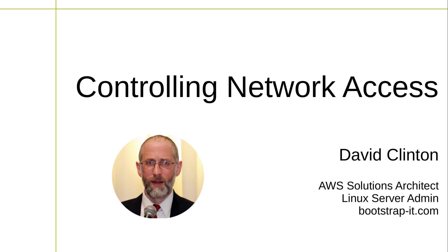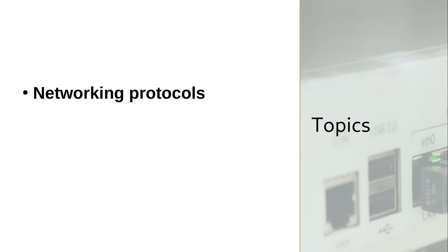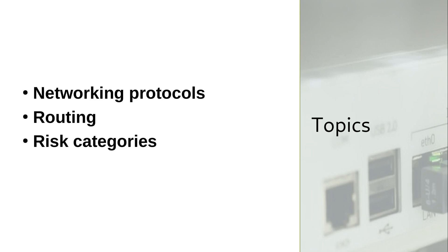Networking is engineering, magic, and skilled trade all rolled into one. Getting all the countless pieces to talk nicely and reliably to each other is complicated. Troubleshooting unexpected outages is worse. But once you've got it all running nicely, that's when you should really be worried, because that's exactly when the bad guys start banging away at the door trying to find a way in. In this section, we're going to cover just enough of the most important networking fundamentals so the security information later will make sense. That means we'll define the core networking protocols and describe addressing and routing methodologies. Then we'll discuss the major risk categories associated specifically with networks, and then finish up with an overview of the security best practices that we should all be adopting.